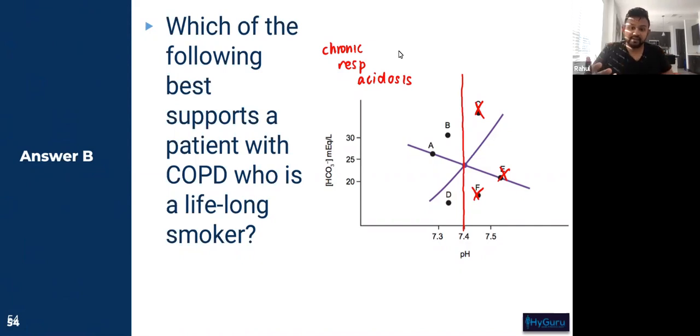In the case of COPD, these patients have a chronic respiratory acidosis. And so we need to find the CO2 isobar that is going to be elevated. And that is either A or B.